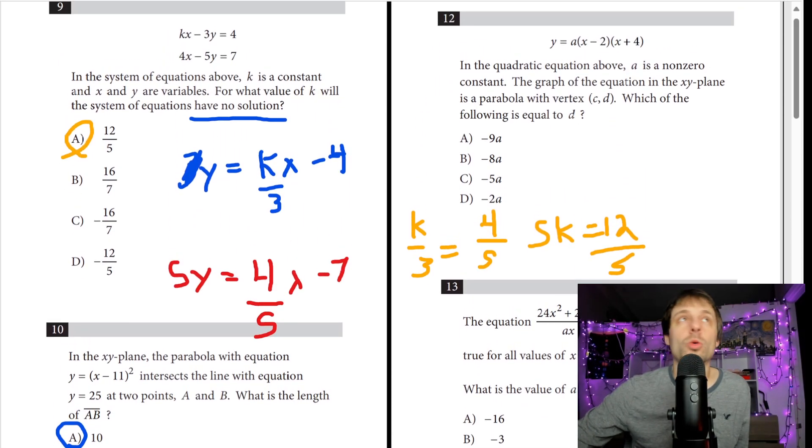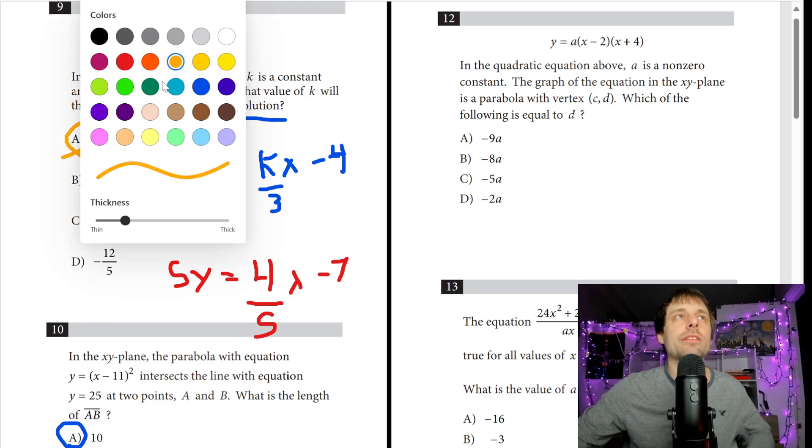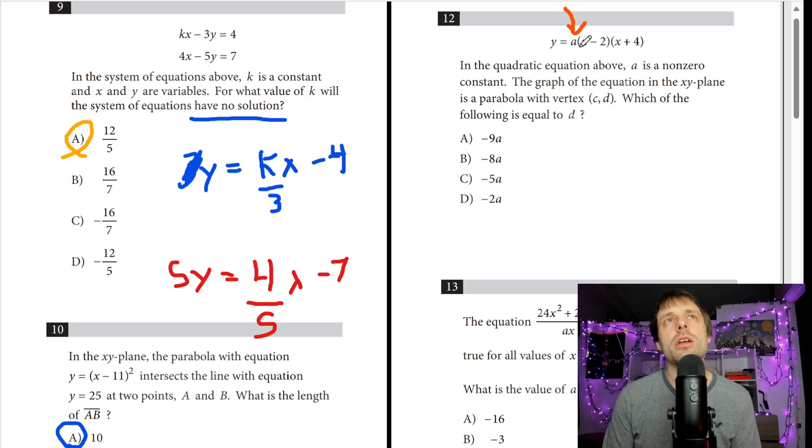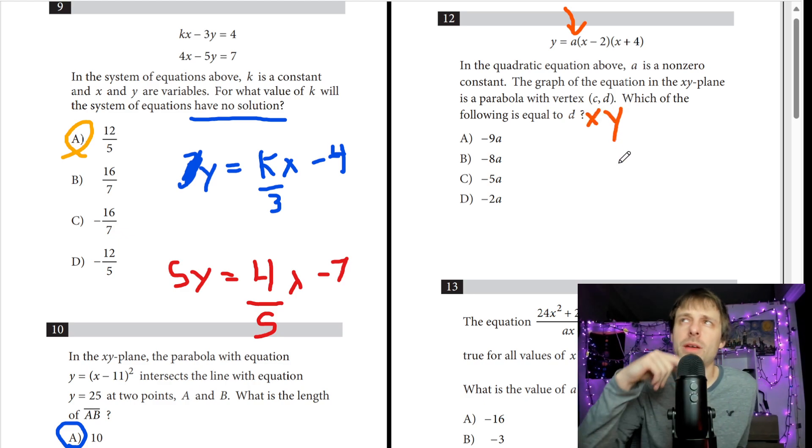And we'll try to finish this page. Number 12. I remember this one. When I look up above here, I never want to forget this a, whether it's standard form, whether it's vertex form, whether it's factored form like this, this a is going to be my multiplier. Does my graph go up or does it go down? So a is this non-zero constant that's out in front of our equation. The graph of the equation is a parabola with vertex c, d, which of the following is equal to d? So I feel like there's multiple things I can consider here. I'm tempted already. I see an x, y point and I could plug in c, d for my x and my y.